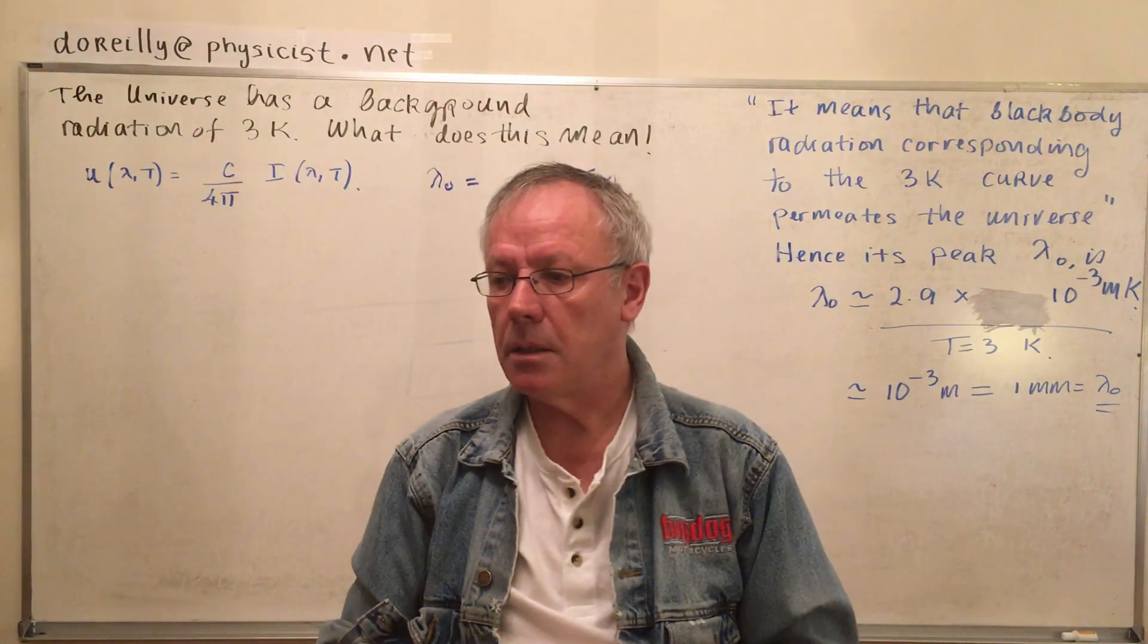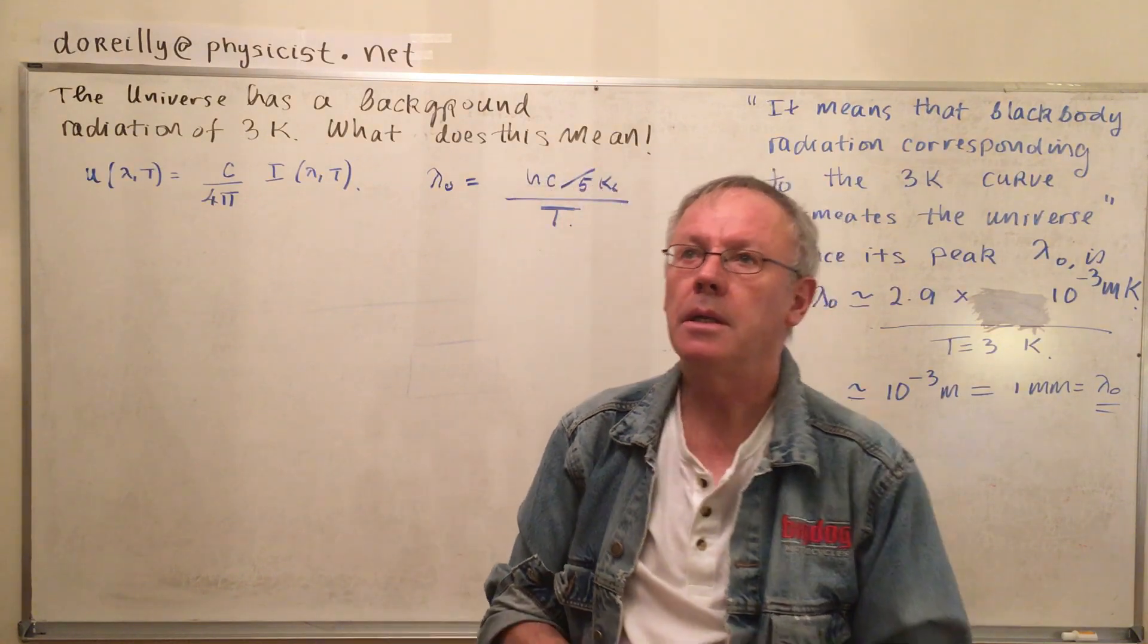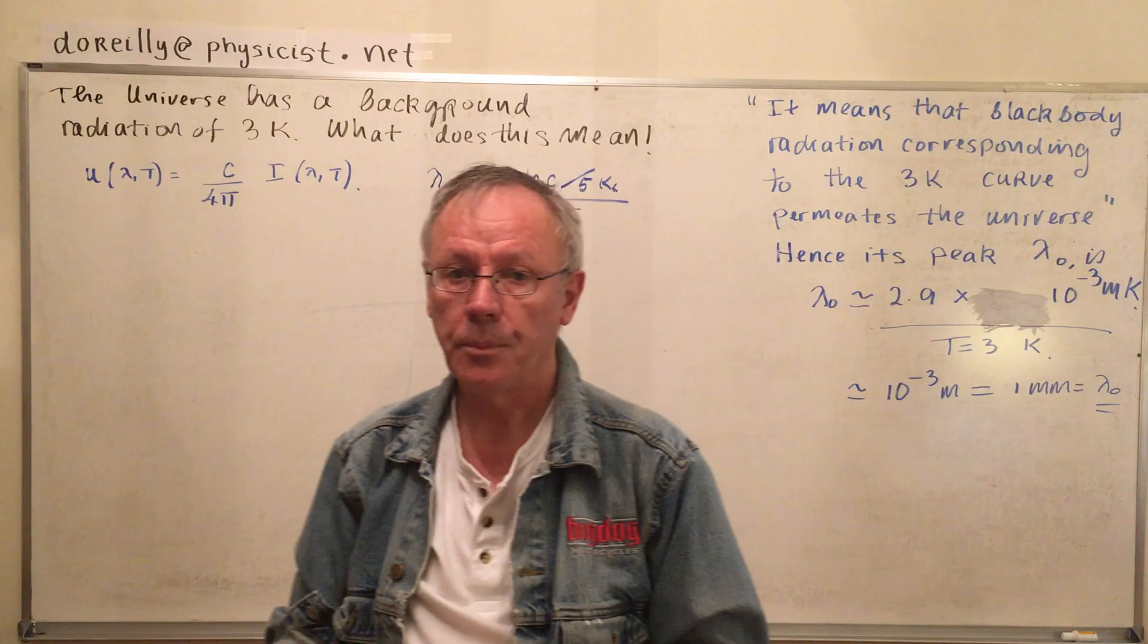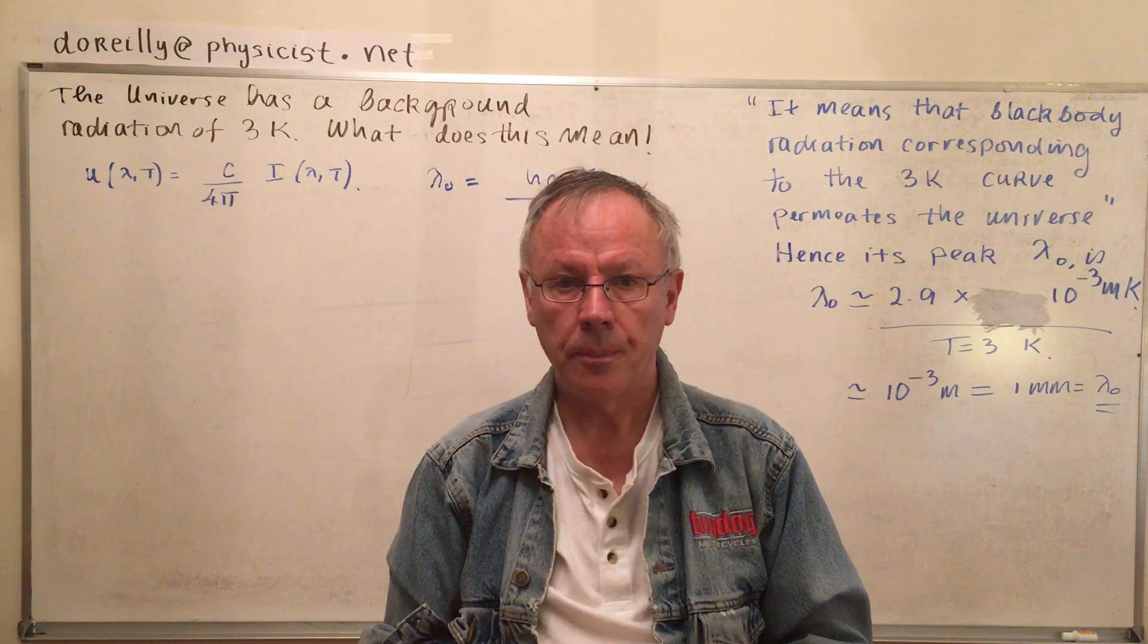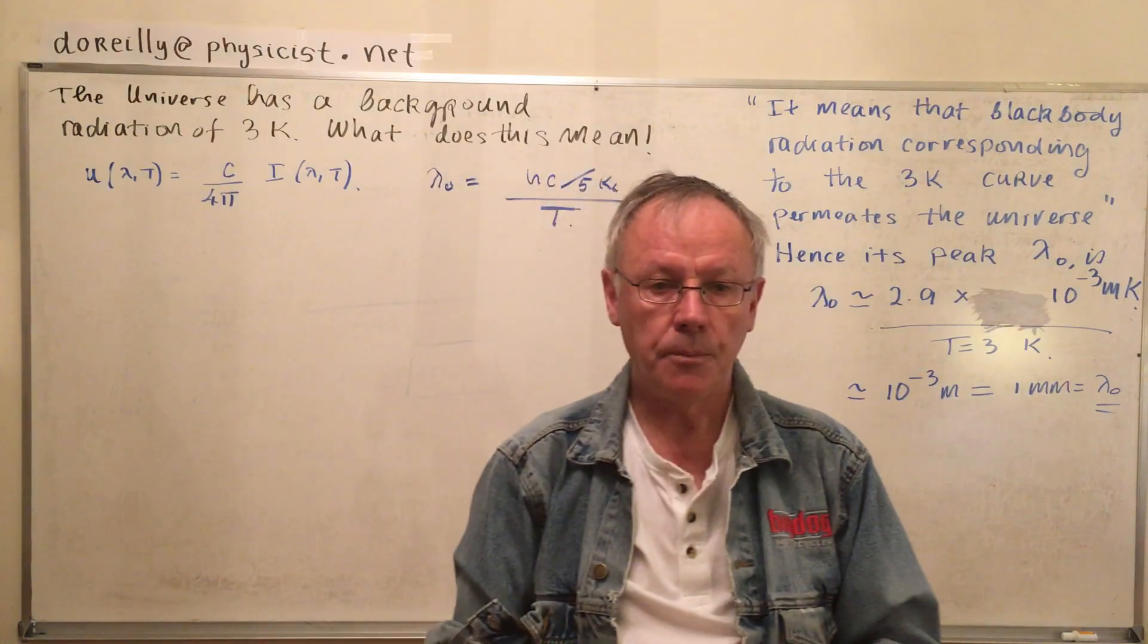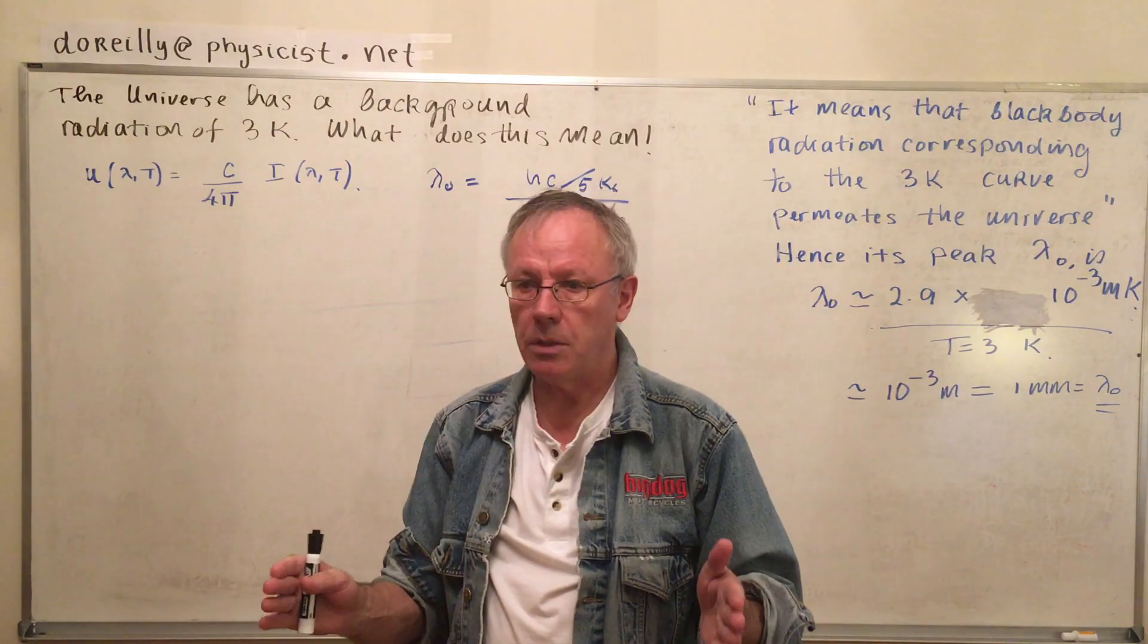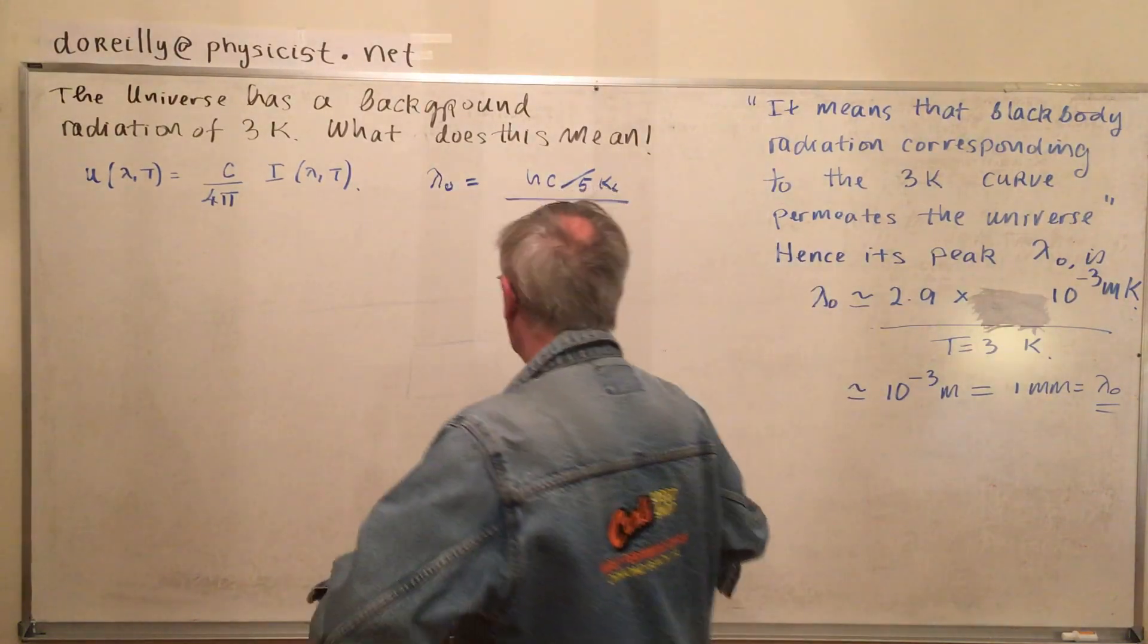Alright, so that's the black body radiation. That was discovered, actually, in 1965, and the Nobel Prize was awarded in 1978. So it's a pretty good one. Okay, what next? So, that's the situation. What about this 3K radiation? Well, the general idea is, this 3K radiation, well, it is really the 3K curve.